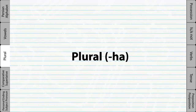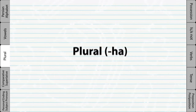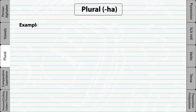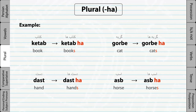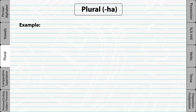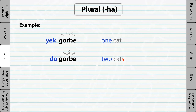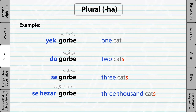Plural. Plural is very simple in Persian. By simply adding HA at the end of a word, you can make the word plural. And like English, when you say 'two cats' in Persian, you don't have to make the word 'cat' plural.